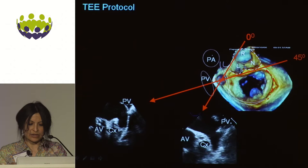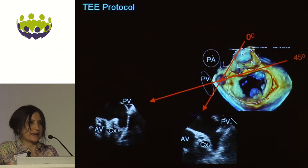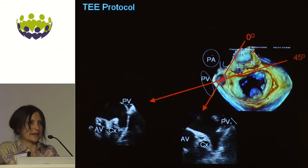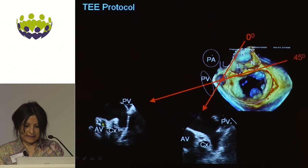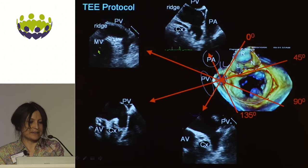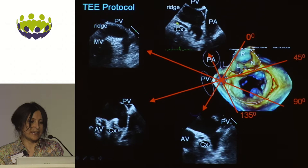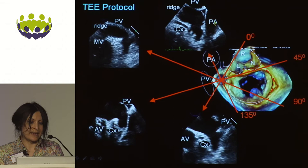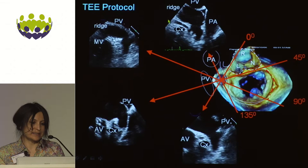At 45 degrees you again have the circumflex in cross-section, the aortic valve beginning to disappear, and your warfarin ridge nicely seen with the left upper pulmonary vein. At 90 degrees you begin to see the ridge in long axis, the pulmonary vein lengthening and opening, and part of the mitral valve comes into view. The final key view, particularly during deployment, is your 135 view — looking more anteriorly. This is often where you see the most anterior and usually the longest lobe of the appendage. You see the circumflex now in long axis opened up, the pulmonary vein above with the long warfarin ridge, and the pulmonary artery, which tells you this is anterior.